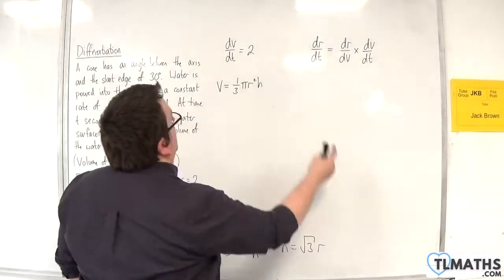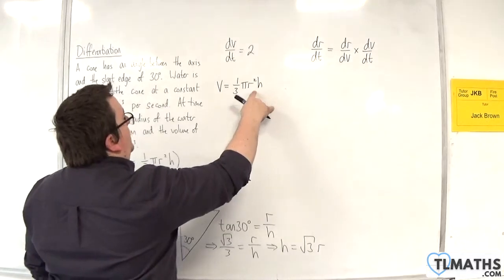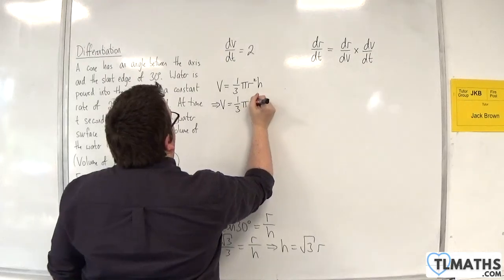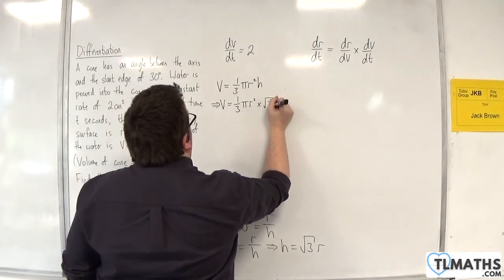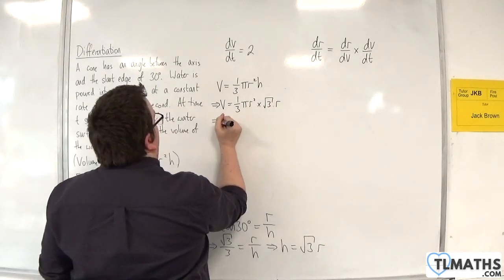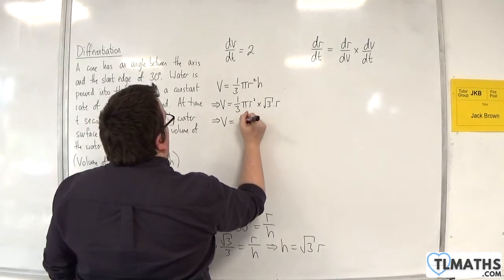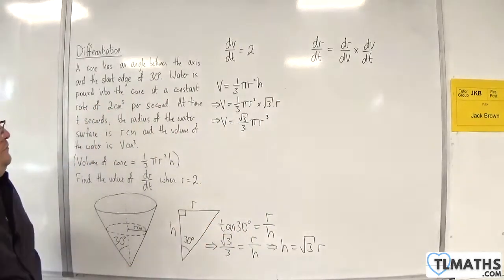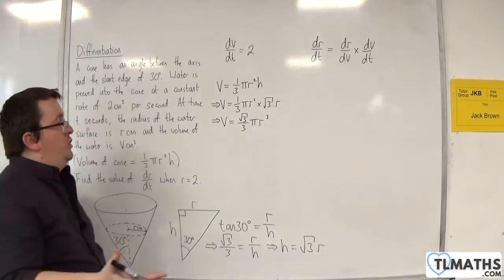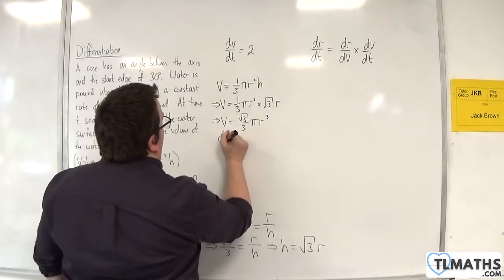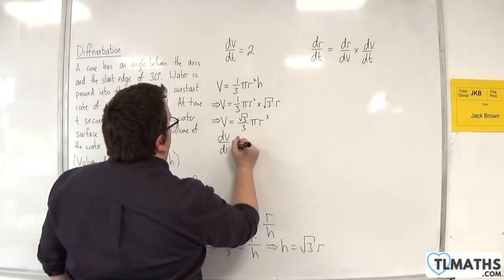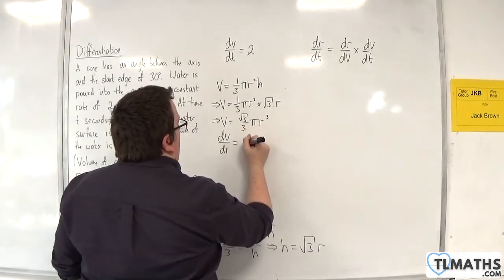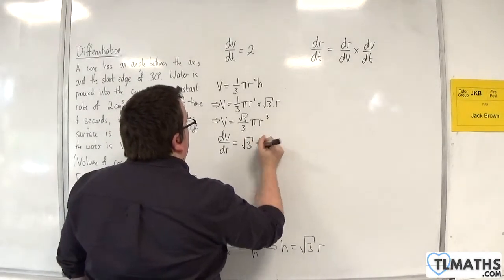I can plug that into my volume formula. The volume is one third times pi r squared times root 3 times r, which is root 3 over 3 pi r cubed. Now I can differentiate it. So dv by dr, differentiating this, the 3 comes down to the front, and I'm going to get root 3 pi r squared.